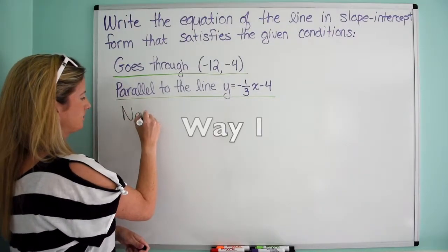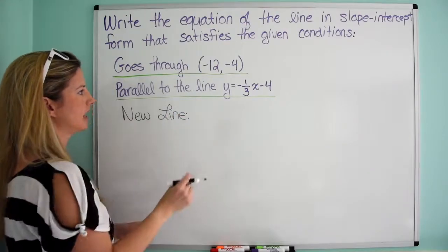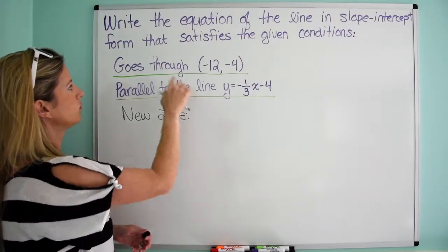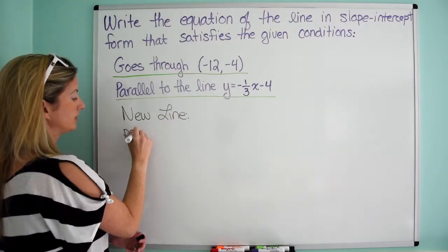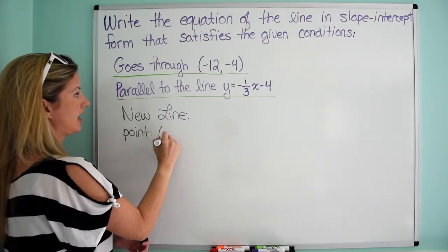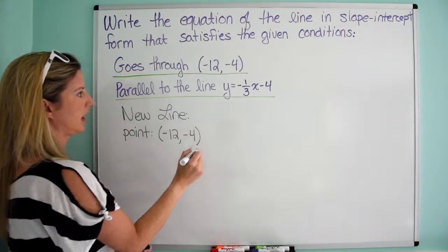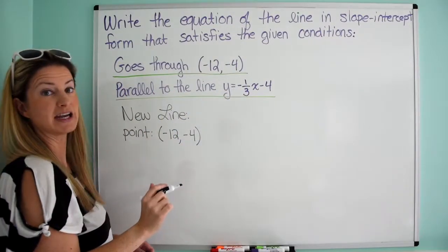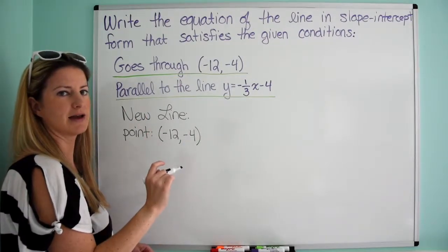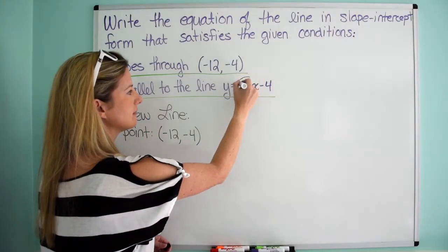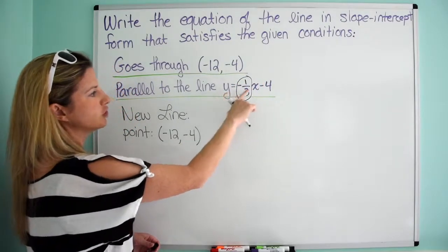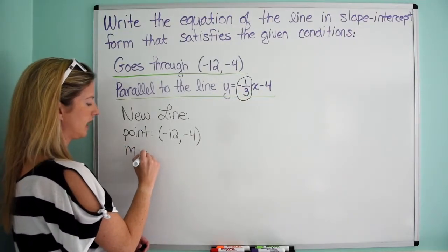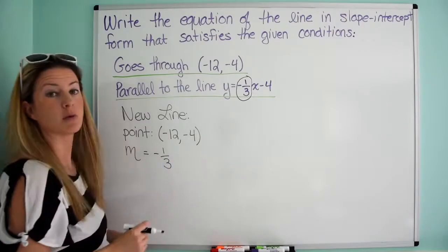I want you to write 'new line' because we have this old line here and we don't want to get confused with that. In our new line, we know it's going through a specific point — negative 12, negative 4. We know it's parallel to the line y equals negative one-third x minus 4. If it's parallel, that means it's going to have the same slope, so the slope is negative one-third.